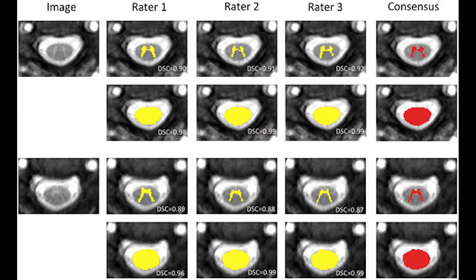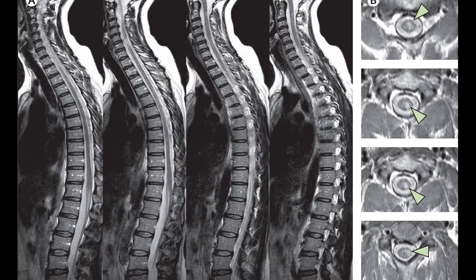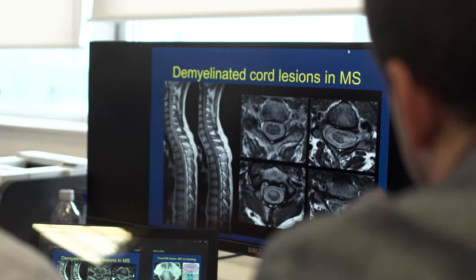Within the Queen Square MS Centre we are running a lot of research studies in MS. What we are doing is basically analyzing the brain images that we are acquiring. But we are also acquiring spinal cord images, which are analyzed at the moment manually. The aim of this study is to automatize the process of analyzing the spinal cord images in order to automatically detect the spinal cord lesions.